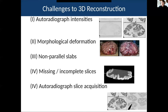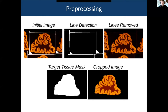There are lots of challenges that had to be addressed to reconstruct these 2D autoradiographs. The different receptor densities have very different levels of intensity between receptor types. The brains had to be acquired fresh, there's a lot of morphological deformation, the brains were cut into slabs that are not perfectly parallel to one another, there are lots of missing or incomplete sections, and there's variability in how the autoradiographs were acquired, including visual artifacts placed on the images.